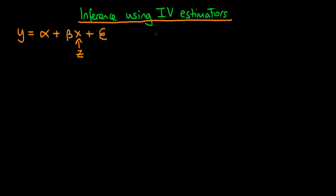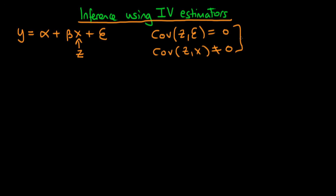It turns out that if we assume our instrument is a good instrument — so the covariance between Z and epsilon is equal to 0, and the covariance of Z with X does not equal 0 — then under these two assumptions, in large sample sizes beta hat IV is approximately normal, centered around the true value beta with some variance which we're going to talk about in this video.